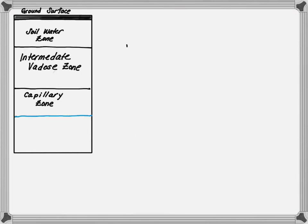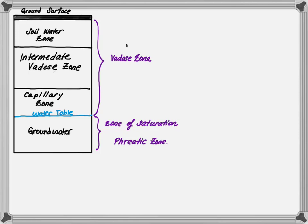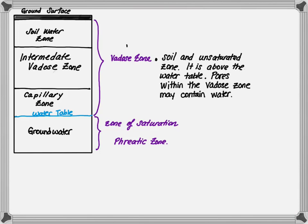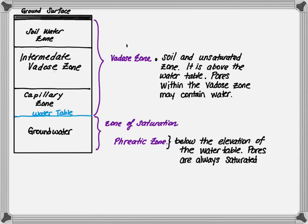Next, let's take a cross section of the groundwater and break it up. We have our unsaturated zone and our saturated zone broken up by the water table. The unsaturated zone is also referred to as the vadose zone, and the saturated zone is referred to as the phreatic zone. The vadose zone is composed of soil and unsaturated material and is located above the water table. Pores within the vadose zone may contain water, while the phreatic zone is the saturated zone below the water table where all the pores are saturated. The zone above the water surface is called the capillary zone, and there is a higher water content in this zone due to capillary effects.